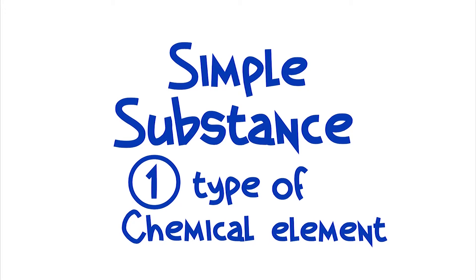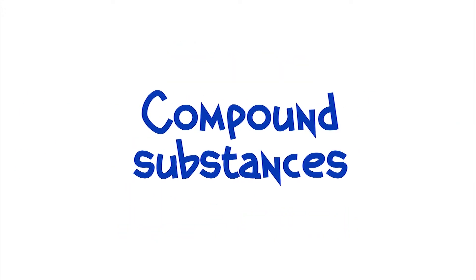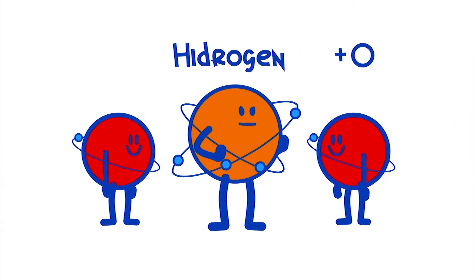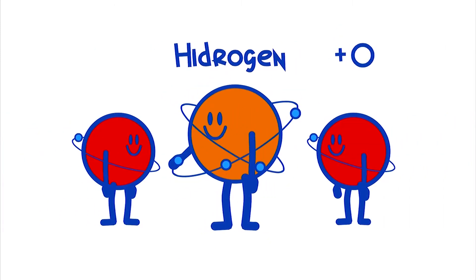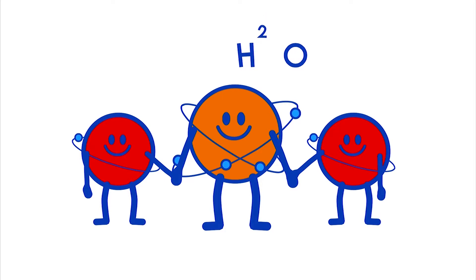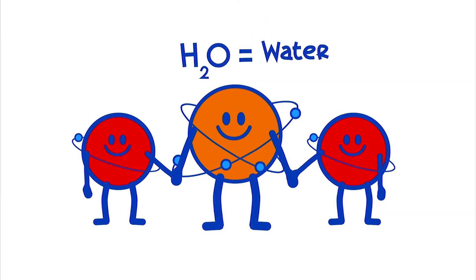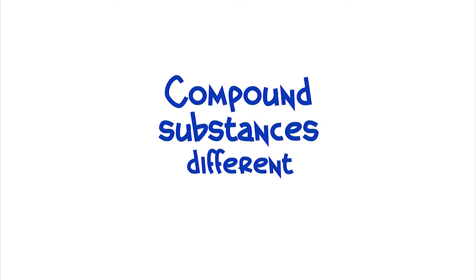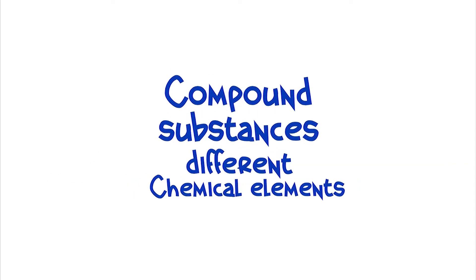We also have compound substances, like water, which is formed by one atom of oxygen attached to two other hydrogen atoms. So compound substances are formed by different chemical elements.